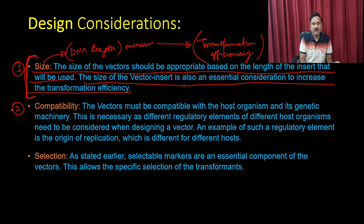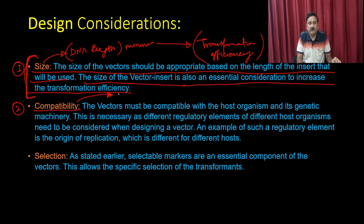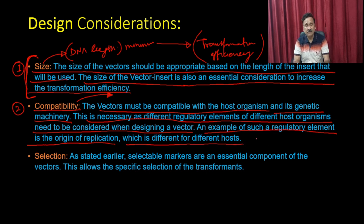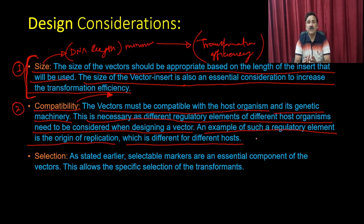The vector must be compatible with the host organism and its genetic machinery. Different regulatory elements of different host organisms must be considered when designing a vector. For example, the origin of replication differs for different hosts — a prokaryotic origin only allows replication in a prokaryotic system. Similarly, you can have origins of replication for yeast or mammalian systems, and the origin of replication determines in which host the vector can replicate.